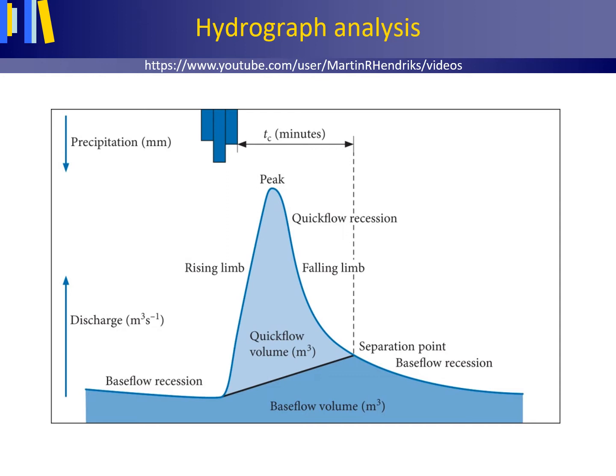During periods with no precipitation, many streams, especially in humid areas, continue to carry water. The streams are fed by processes such as sustained groundwater flow and slow throughflow through the soil matrix from an earlier precipitation event or events. The discharge caused by processes delivering water slowly to the stream is called base flow, and for the related discharge volume, we use the term base flow volume.